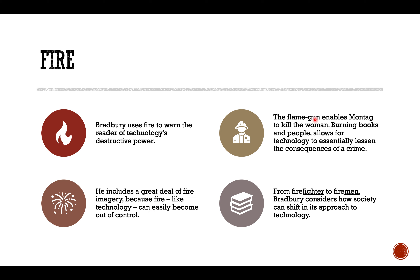The flame gun, for instance, enables Montag to kill the woman and burn the books — essentially the way technology can be turned against people, turned against the very way of life that people have. From firefighter to fireman, Bradbury considers how society can shift in its approach to technology. Instead of fighting the unchecked spread of technology, this society welcomes it and uses technology to turn on its own people.